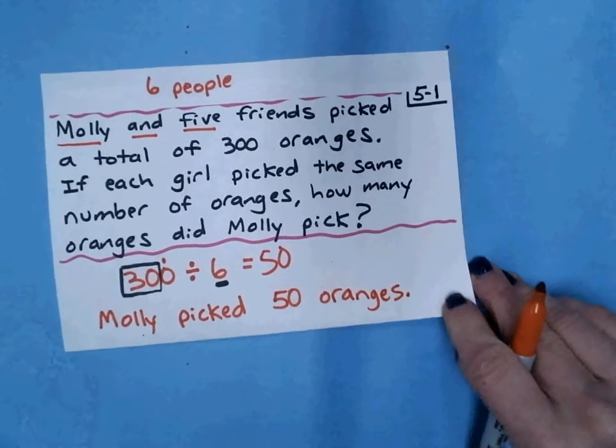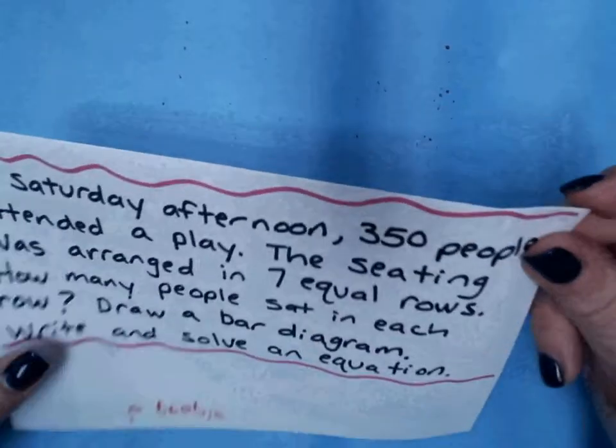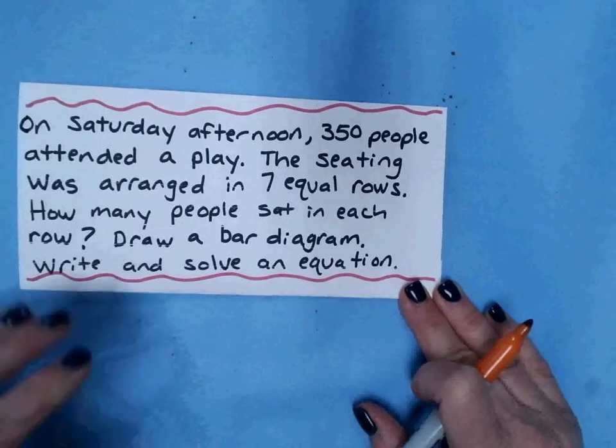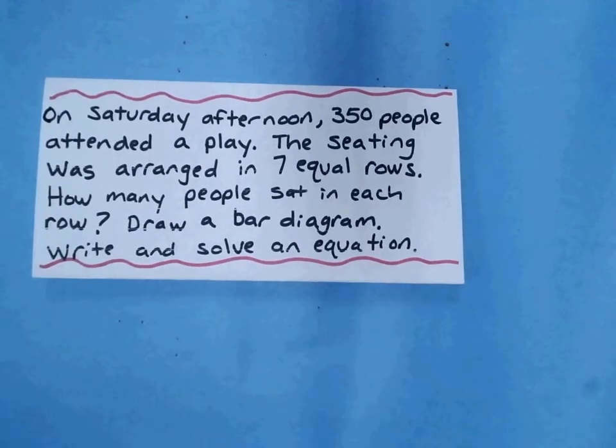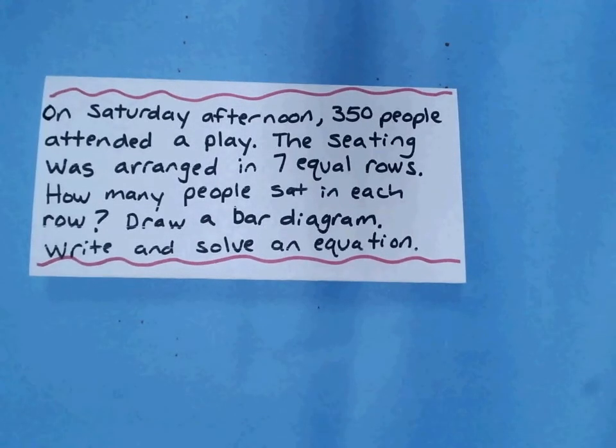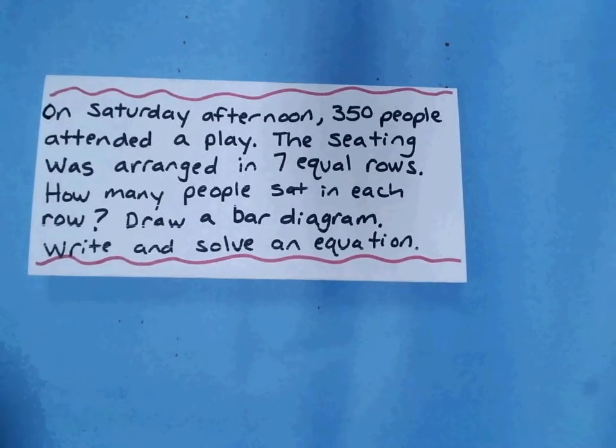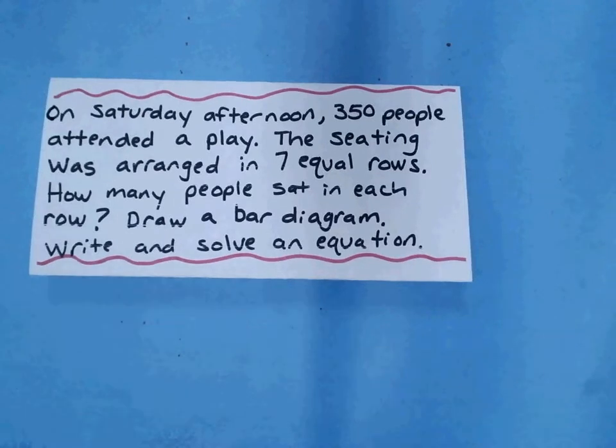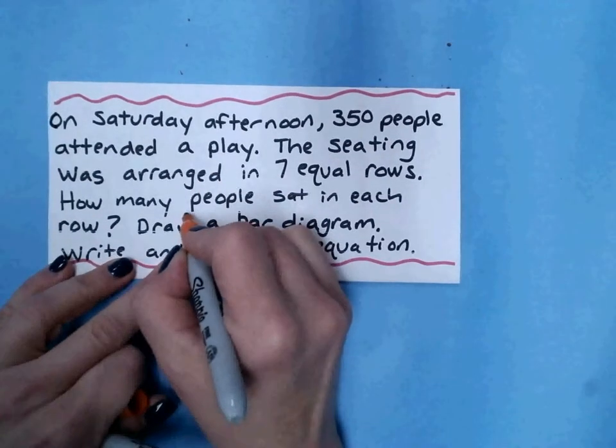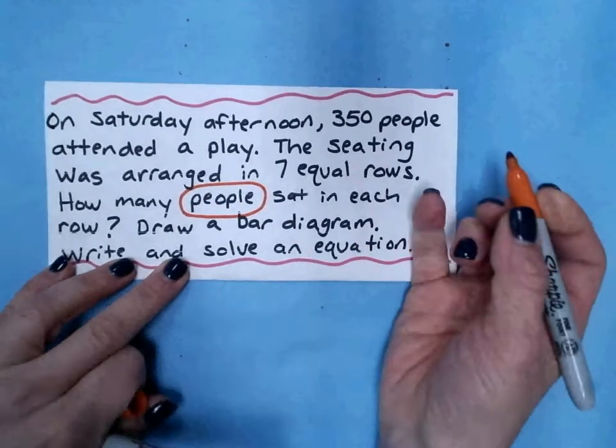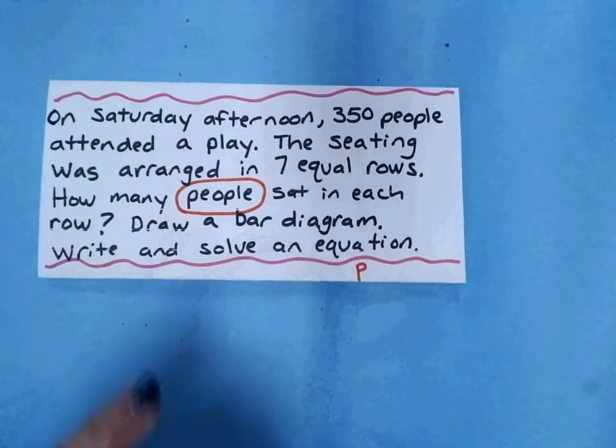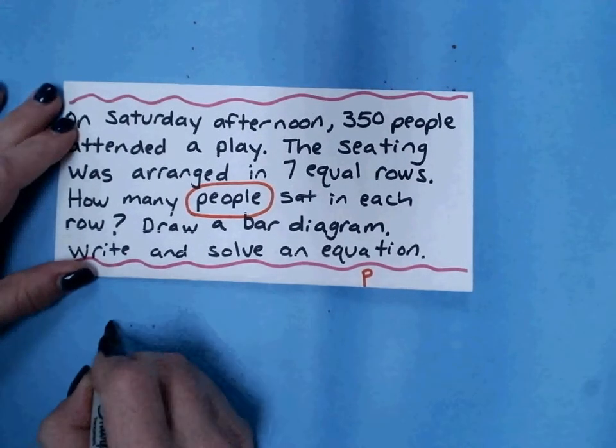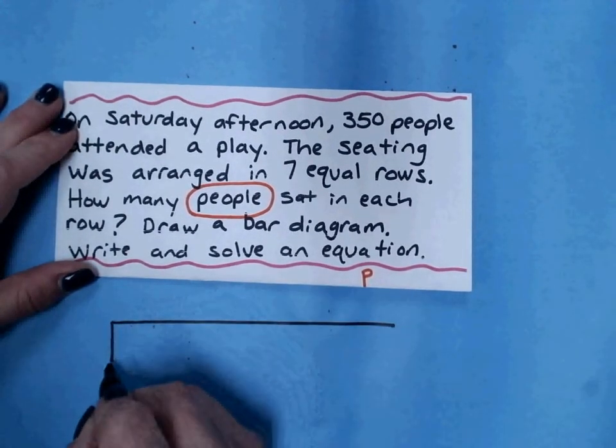The last example uses what we call a bar diagram. Let's go through that example. Here I've got on Saturday afternoon, 350 people attended a play. The seating was arranged in 7 equal rows. How many people sat in each row? Draw a bar diagram, write and solve an equation. In my problem here, I'm looking at what are they asking me to find here. And I want to find out how many people. I'm going to choose the variable P to stand for people. They want a bar diagram. If there's 7 equal rows, I'm going to draw a bar diagram that has 7 equal boxes.